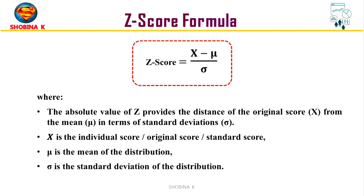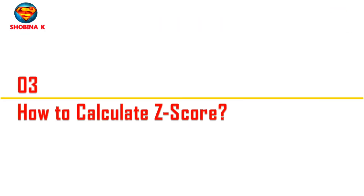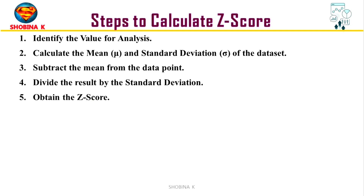Now let's see how to calculate the z-score. You can follow these steps to calculate the z-score for a data point in a data set. First, identify the value for analysis. Second, calculate the mean and standard deviation of the data set. Then subtract the mean from the data point. Next, divide the result by the standard deviation. And finally, obtain the z-score.